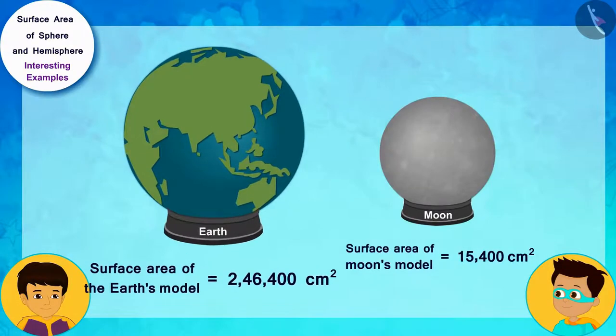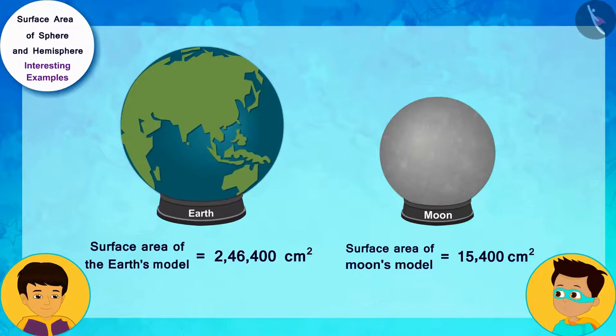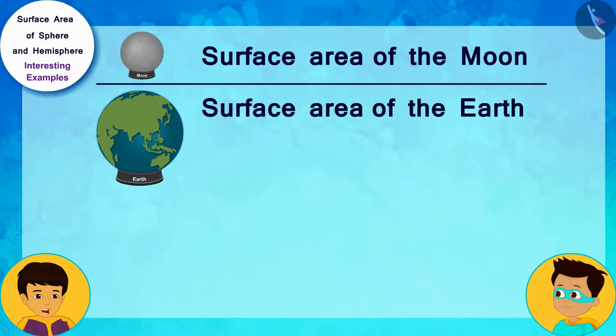The clay used in the model of the earth is many times more than the model of the moon. And do you know another fun fact? If we find the ratio of the clay used in the model of the moon and the clay used in the model of the earth in this way, then you can see that their ratio is 1 by 16.